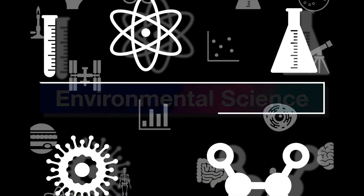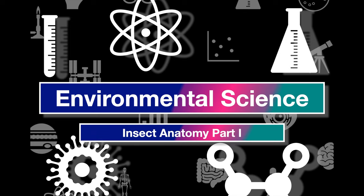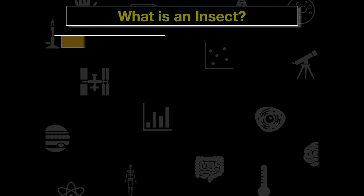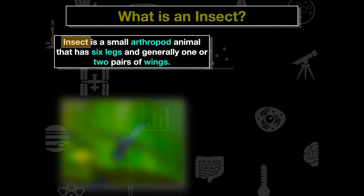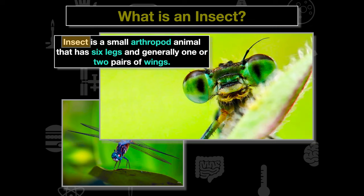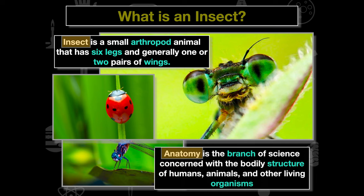Welcome to our next video on environmental science, specifically insect anatomy part one. Before we jump into anatomy, we have to understand what an insect is. An insect is a small arthropod or animal that has six legs and generally one or two pairs of wings. Examples include a dragonfly, a praying mantis, or a ladybug. Anatomy is the branch of science concerned with the bodily structure of living organisms, and today we'll be dissecting lanternflies and examining their anatomy.